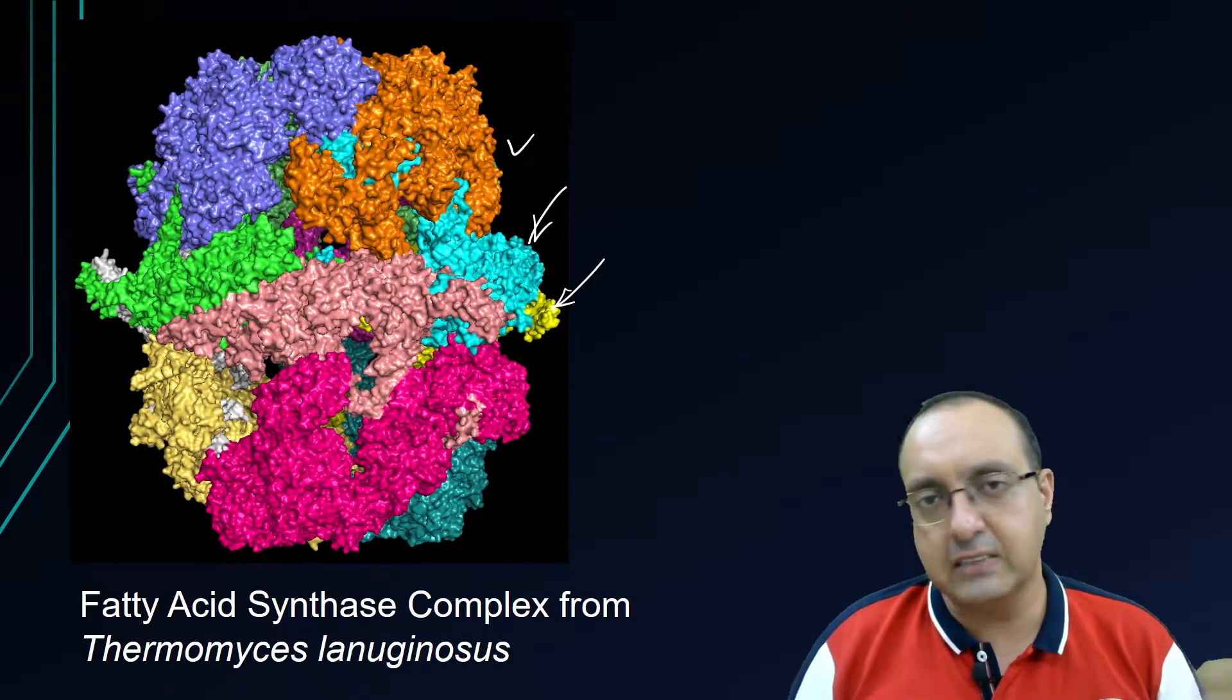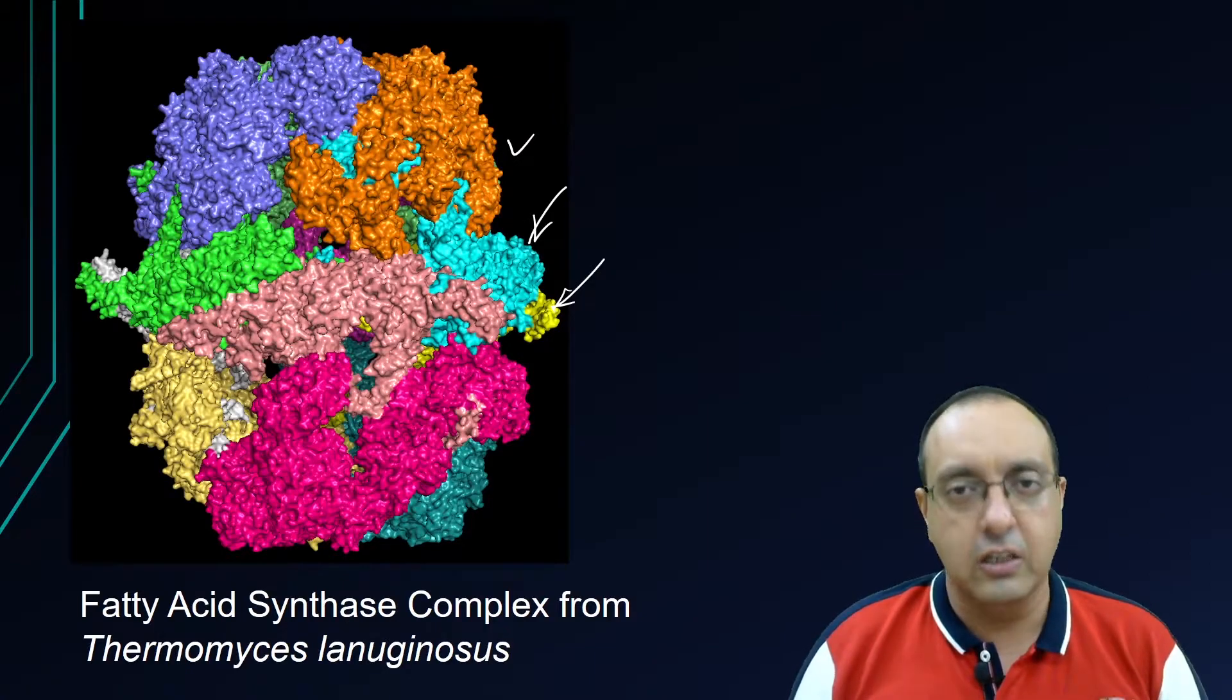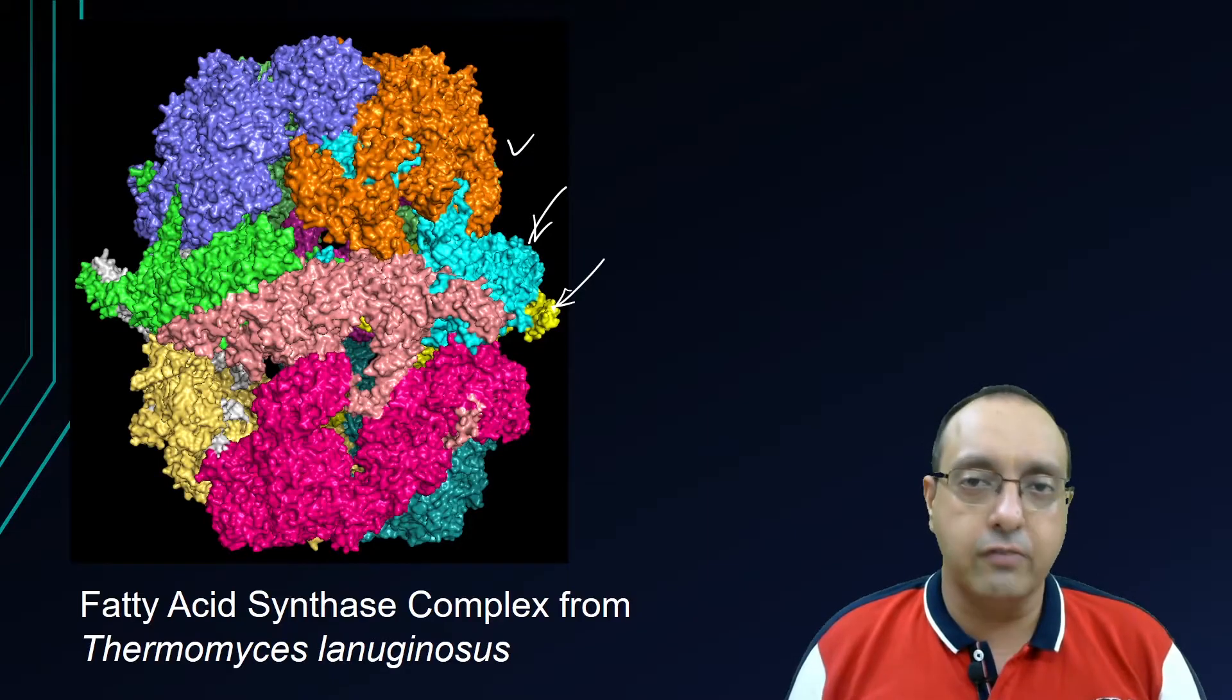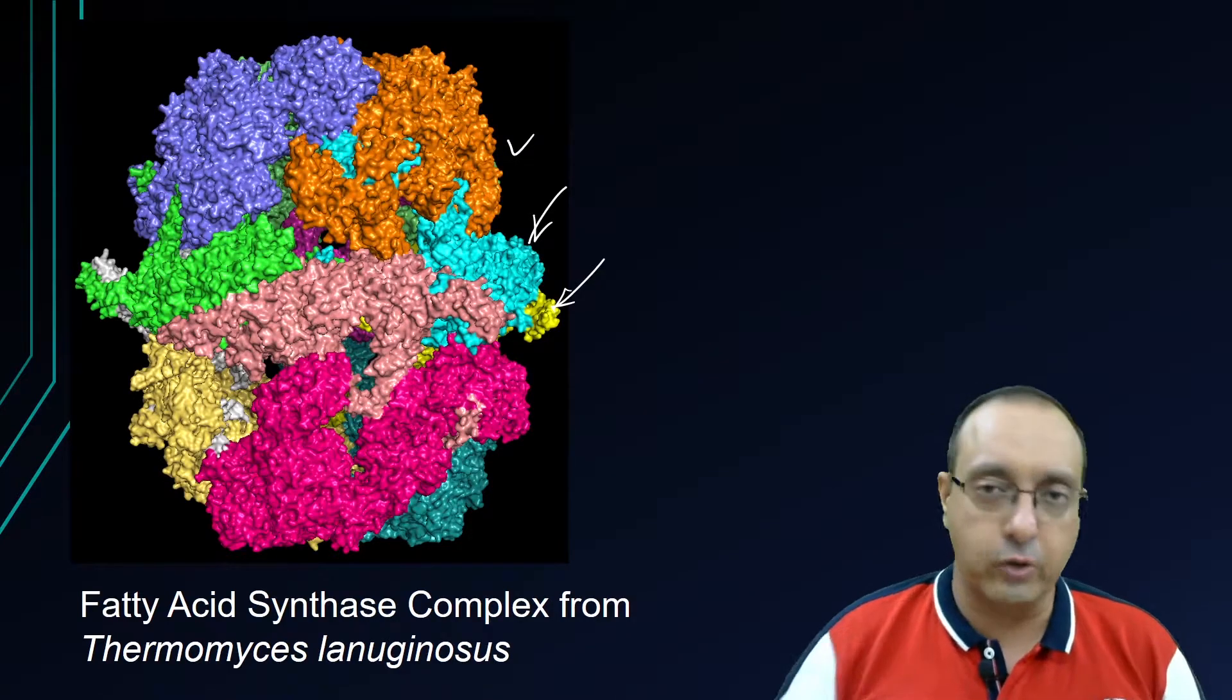There are a couple of assays, as recently we discussed. Yeast two-hybrid assay is also a very good technique to determine whether two proteins interact with each other. But the gold standard for measuring protein-protein interactions remains the immunoprecipitation and co-immunoprecipitation. So let's take a look.